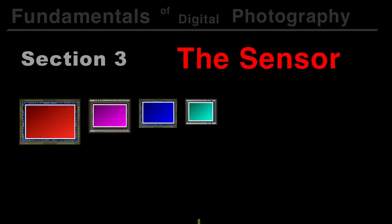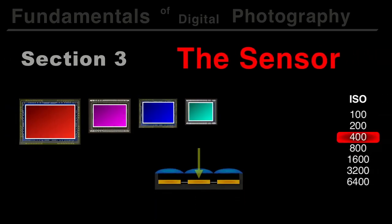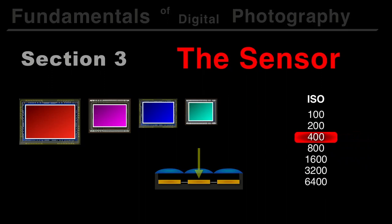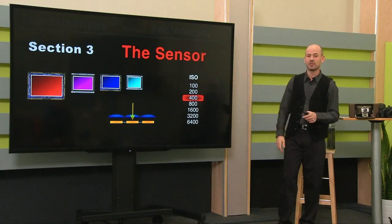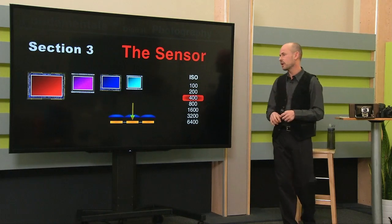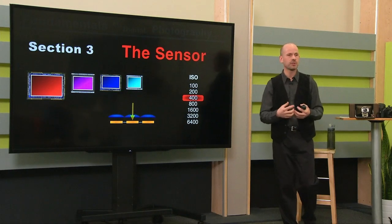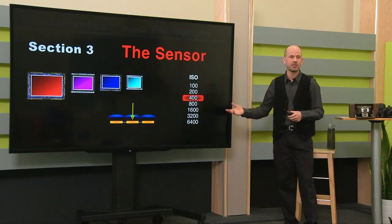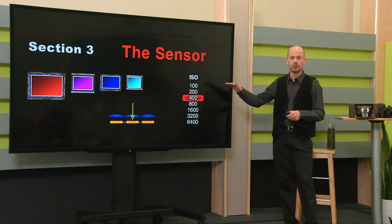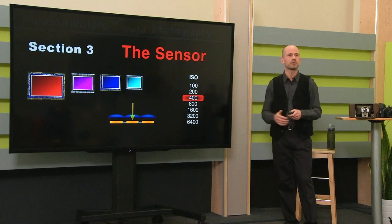Section 3 is all about the sensor. If this class had taken place 20 years ago, it would have been called film — but now we need to talk about the sensor. We're going to talk about different sensor sizes, the pixels on the sensors, and how many pixels you need to make a good picture. Then we're going to talk about how to set your ISO and strategies for where you want to have your ISO set in different situations.